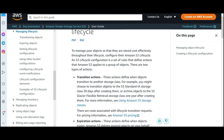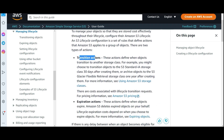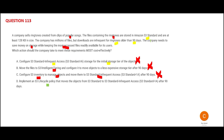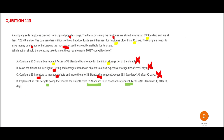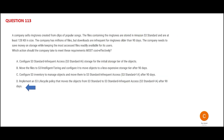You can configure an S3 Lifecycle Policy, which helps you with transition actions and expiration actions. In this question, we need transition actions to move objects from S3 Standard to Infrequent Access after 90 days. You can also use it for expiration actions where S3 deletes expired objects on your behalf. This is the final answer.